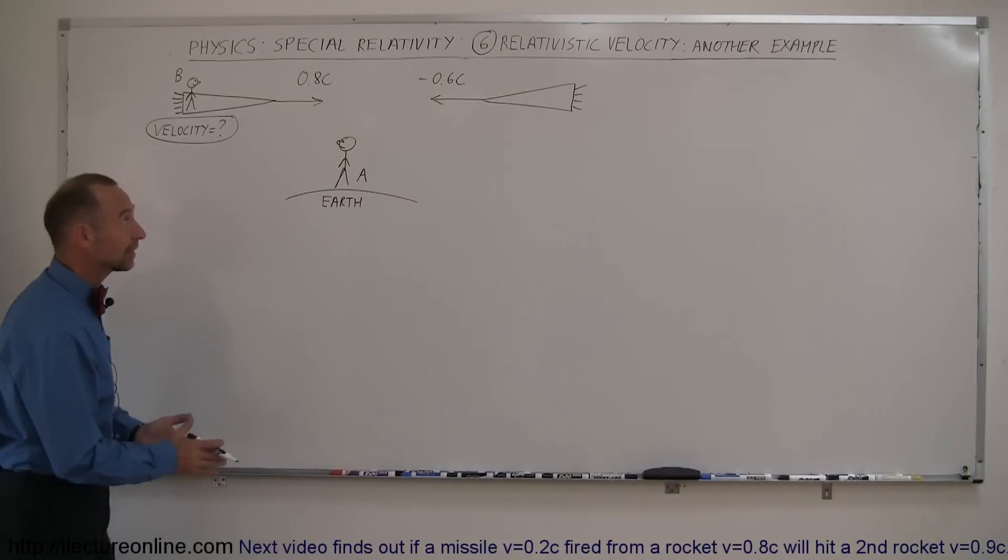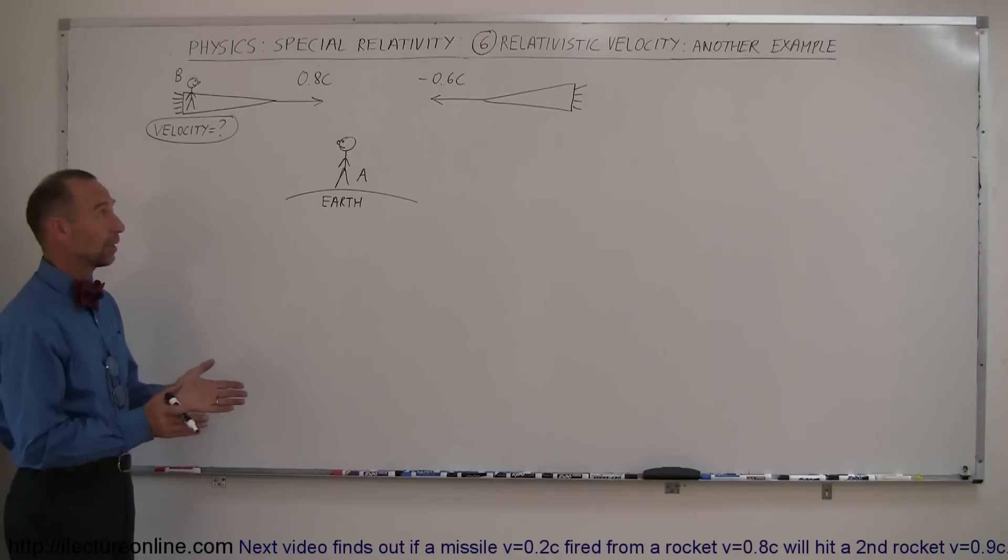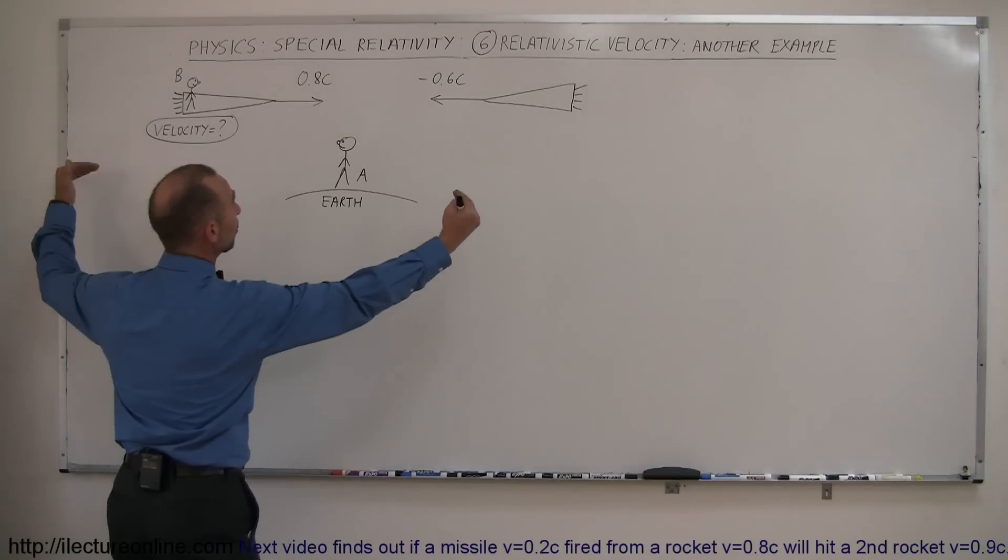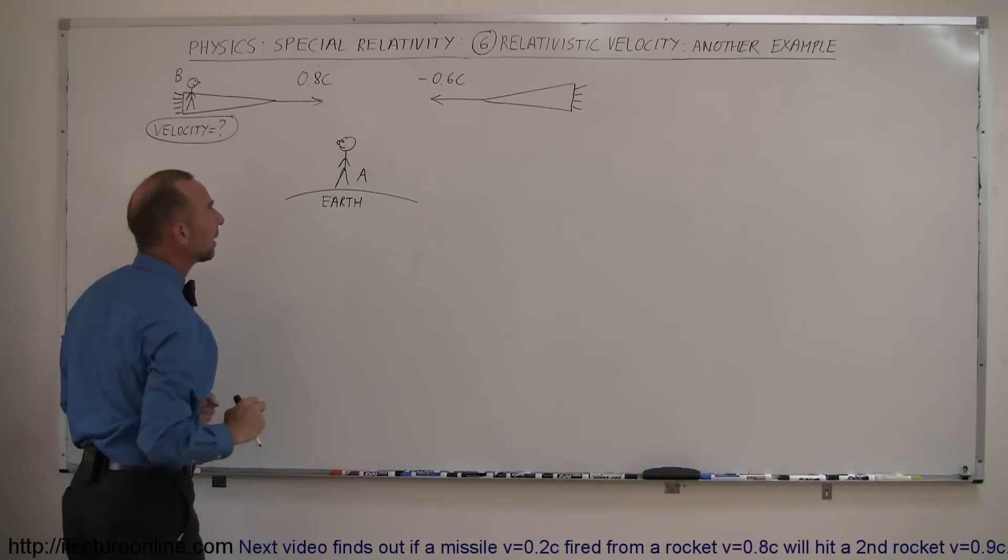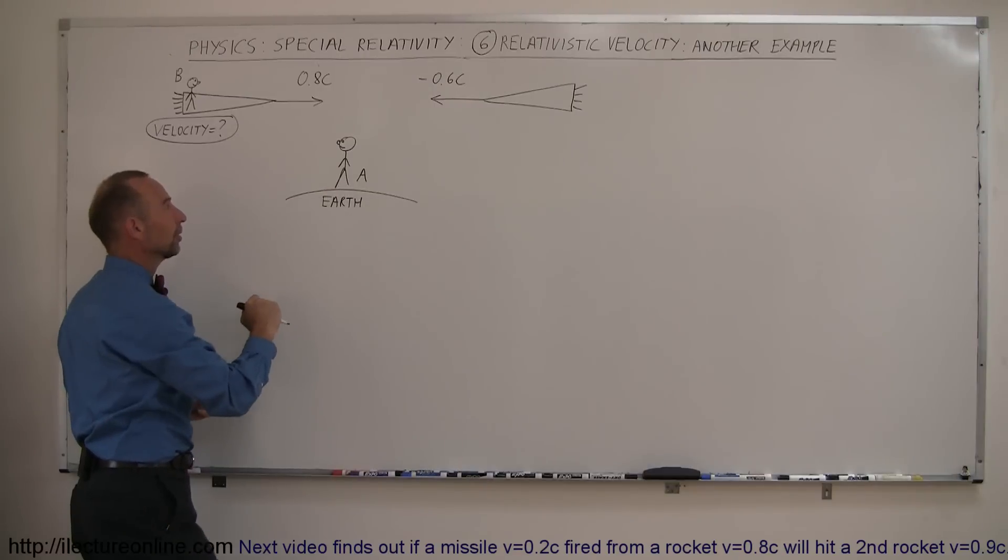Here's another example of how to calculate relativistic velocities. We have two spaceships approaching each other. The spaceship on the left is moving to the right at 0.8c relative to the Earth, relative to an observer on the Earth.